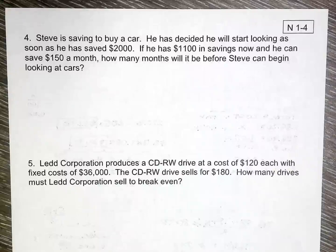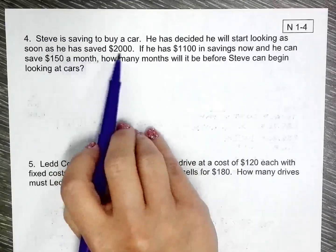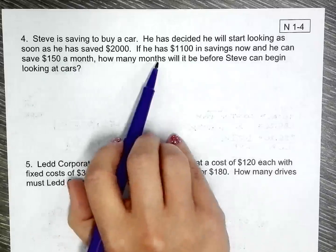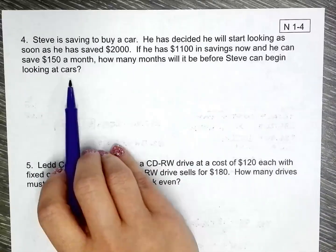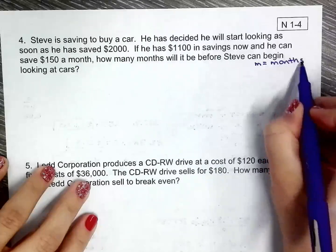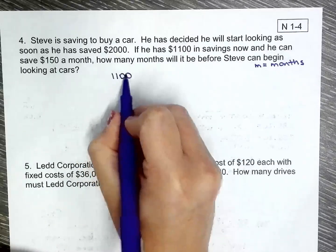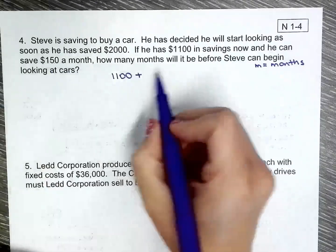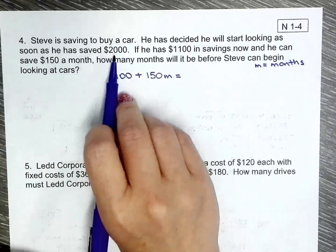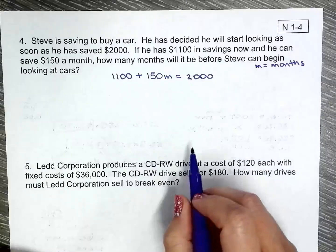The next one, we have Steve is saving to buy a car and he decided to start looking as soon as he has saved $2,000. If he has $1,100 and he can save $150 a month, how many months will it be before he can start looking for cars? I'm just going to call it months so I don't forget and I don't lose focus on the question. He already has $1,100 and he's saving $150 a month each month. He'll be ready to start looking for a car when that number reaches $2,000. At what point, after how many months will that happen?